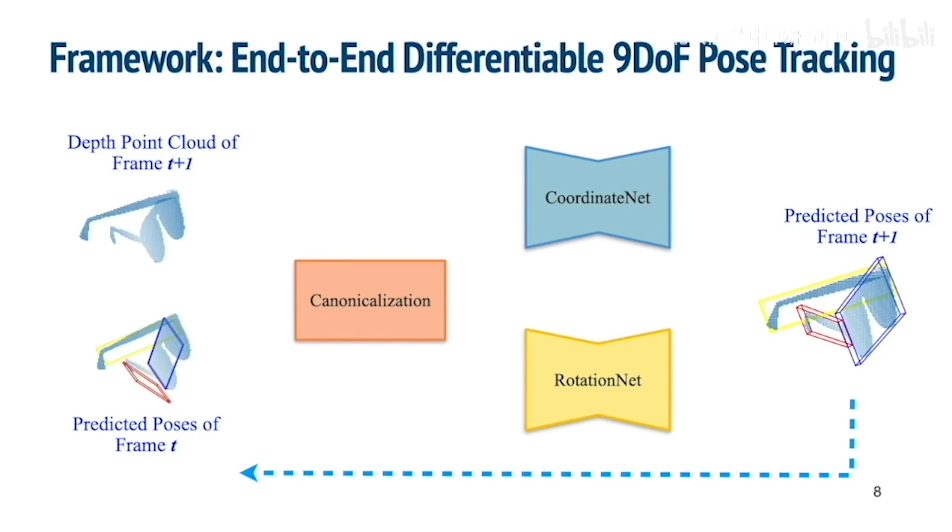Our devised pose canonicalization module first transforms and canonicalizes the input point clouds. Then the canonicalized point clouds will be pushed through coordinate net for normalized coordinate prediction, and rotation net for rotation regression. Combining the outputs of the two networks, we can end-to-end differentiably predict the 9 degree of freedom poses at frame T plus 1.